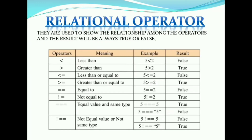Next is the relational operator. By the word relational, these operators show a relation. When we use a relational operator, the result will be either true or false. When you get true or false as output, you will use the boolean data type. Operators include greater than, less than, and less than or equal to. Remember these operators.